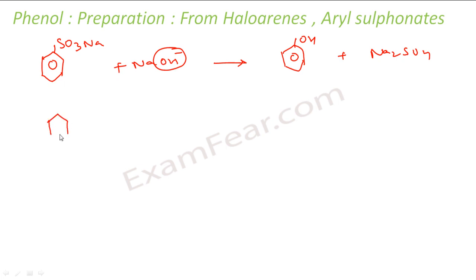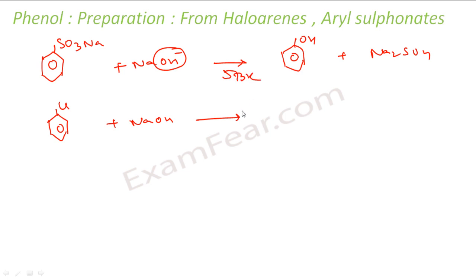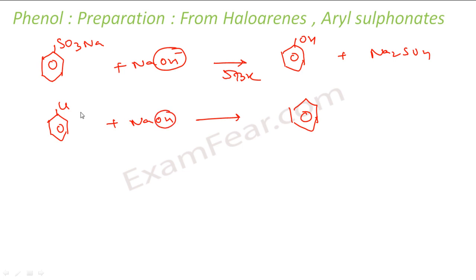Also from aryl halides: let's take chlorobenzene. You add NaOH and the temperature has to be high. In this case also, the OH⁻, being a strong nucleophile, will replace the chlorine group to give phenol.